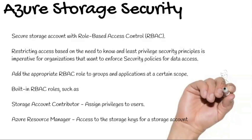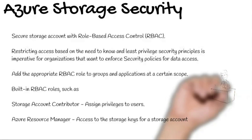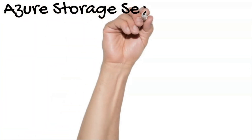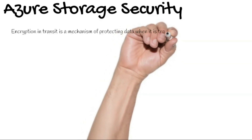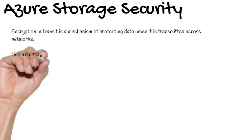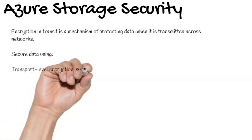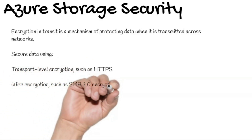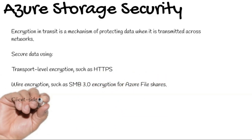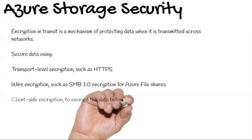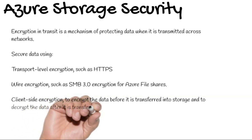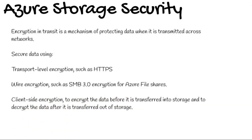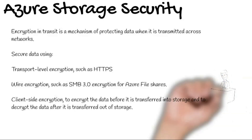Azure Resource Manager can access the storage keys for a storage account. Encryption in transit is a mechanism of protecting data when it is transmitted across networks. You can secure data using transport-level encryption such as HTTPS, wire encryption such as SMB 3.0 encryption for Azure file shares, and client-side encryption to encrypt data before it is transferred into storage and to decrypt it after it is transferred out.